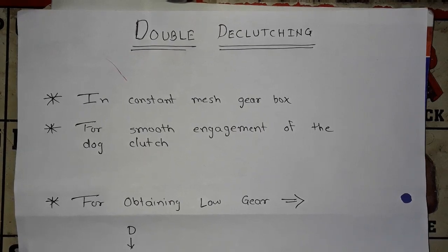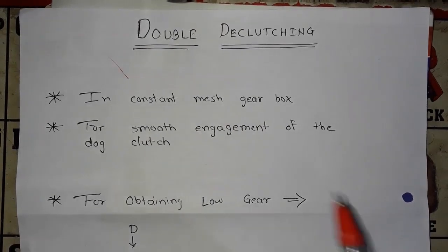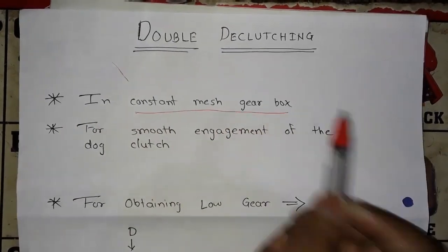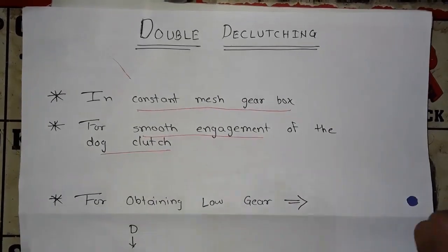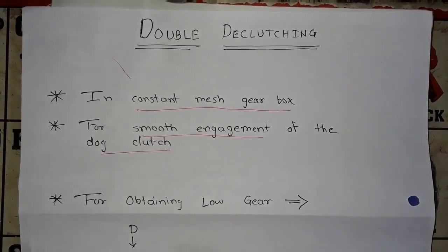Double de-clutching is specially used in constant mesh gearbox for smooth engagement of the dock clutch with the main shaft gear.